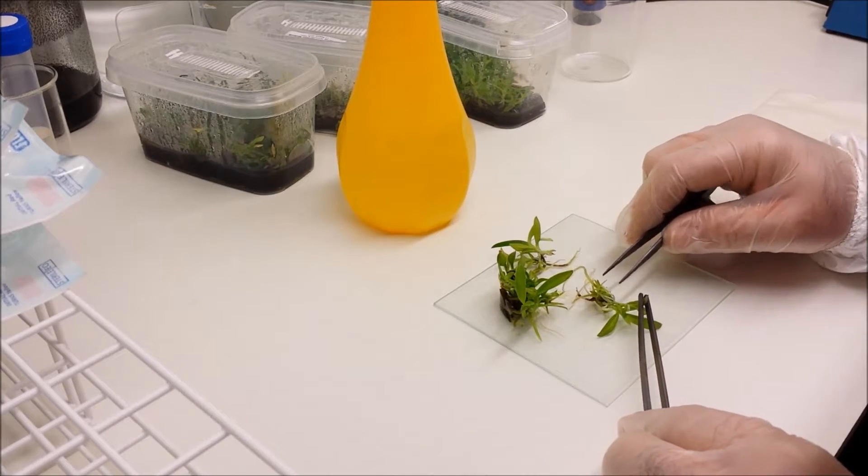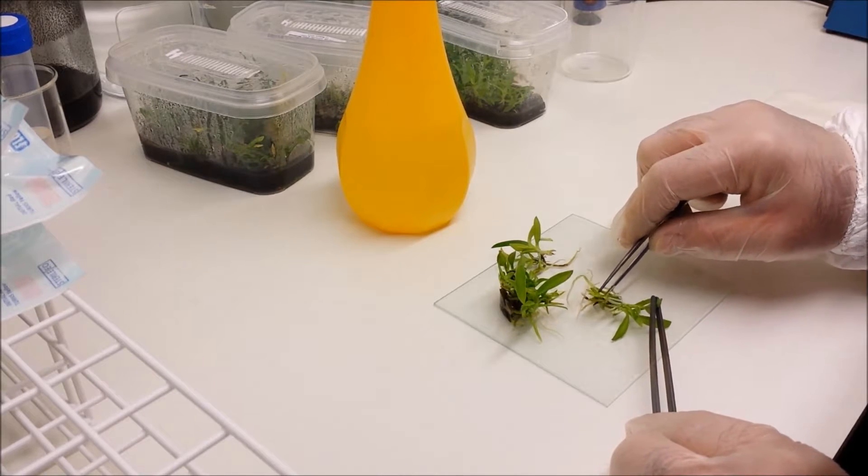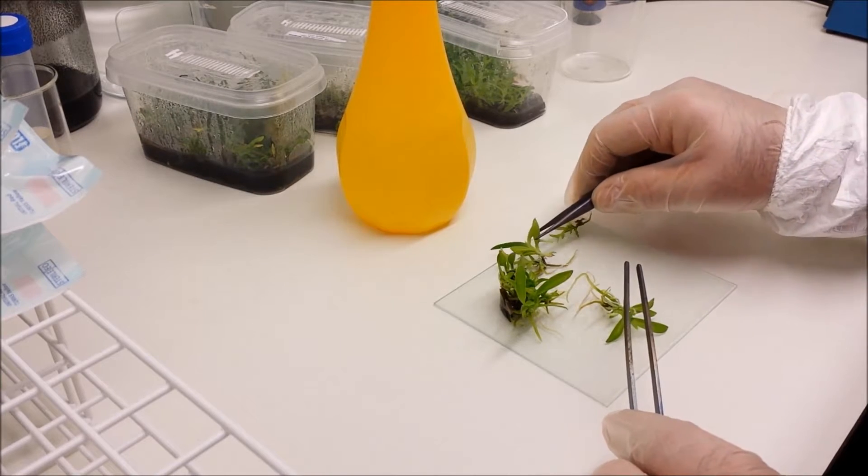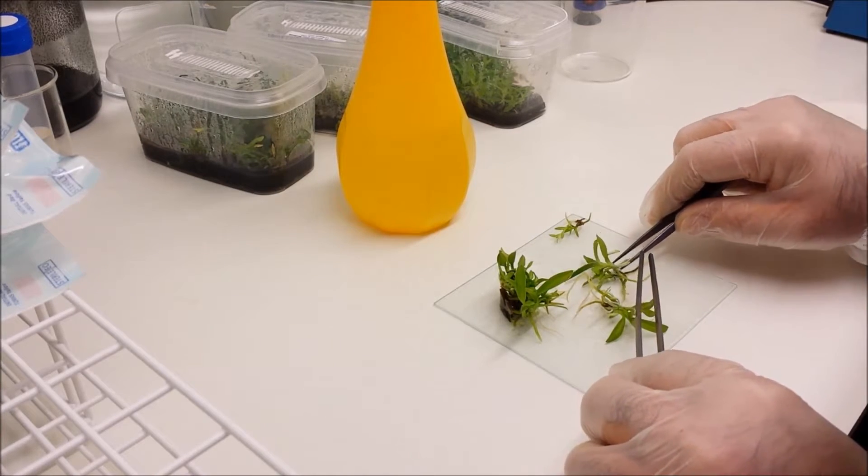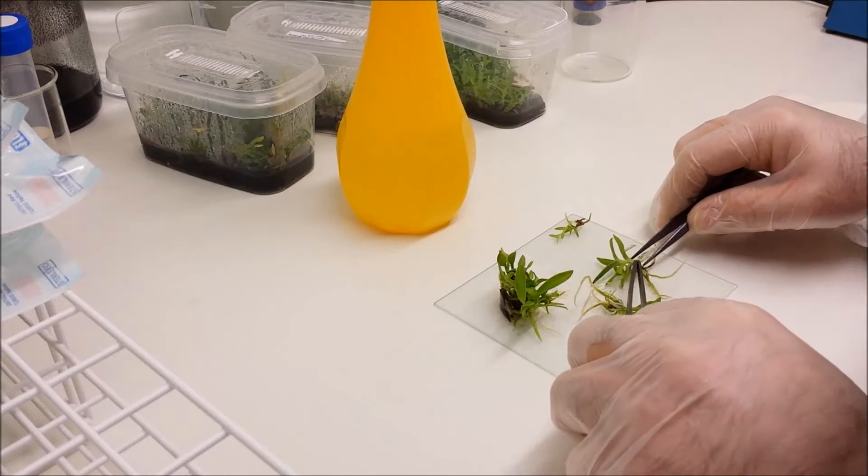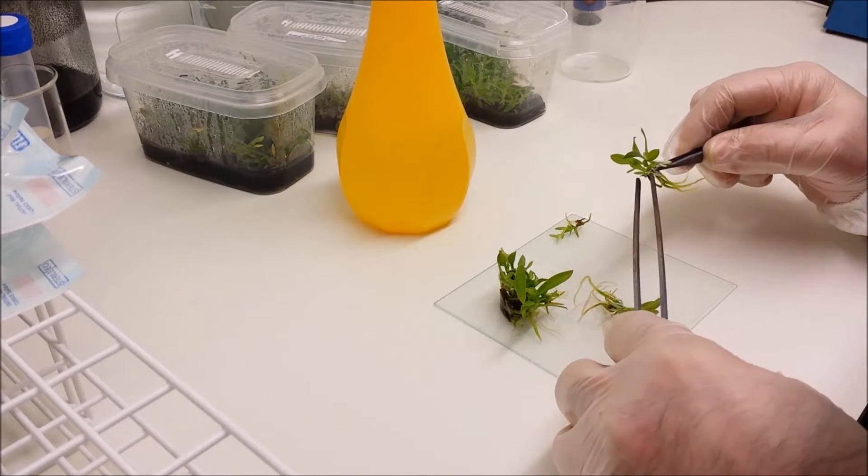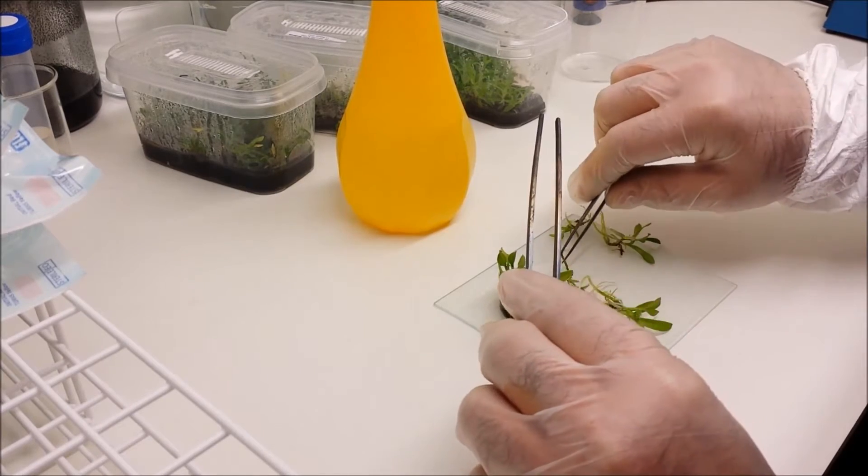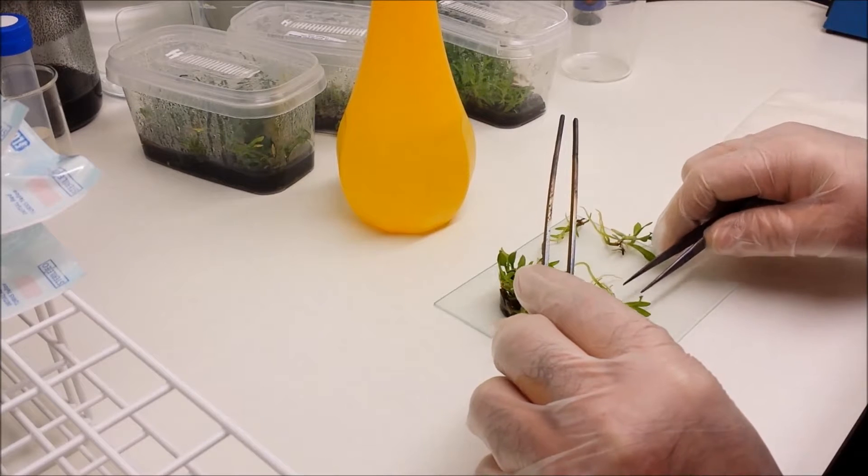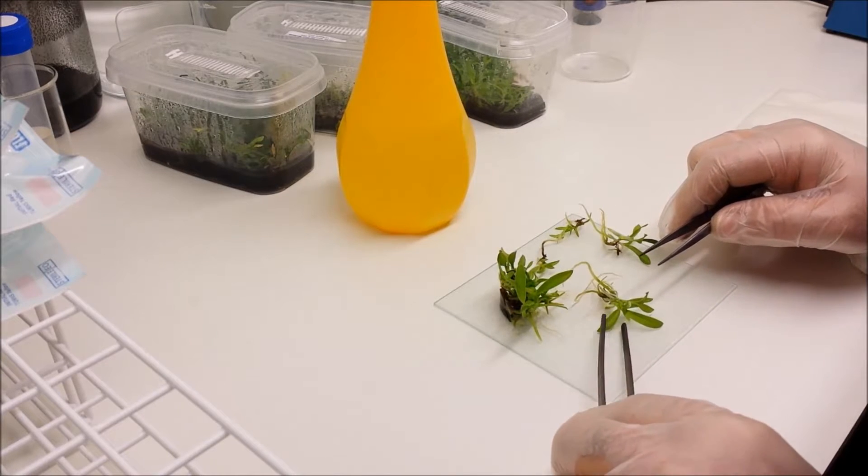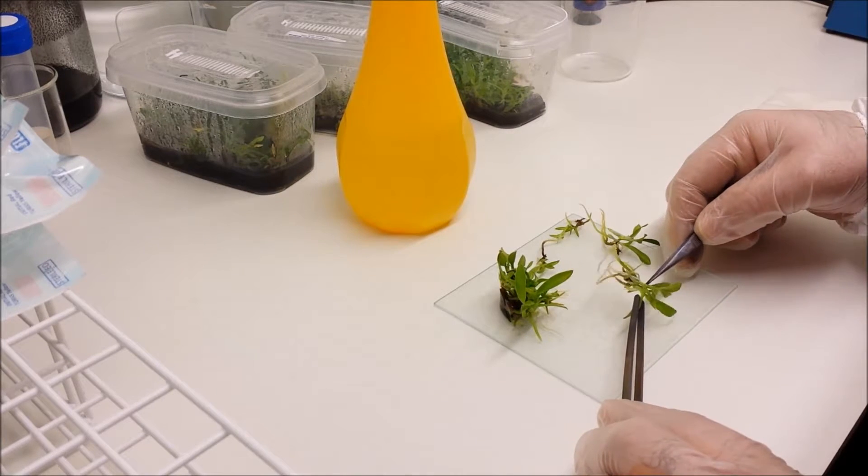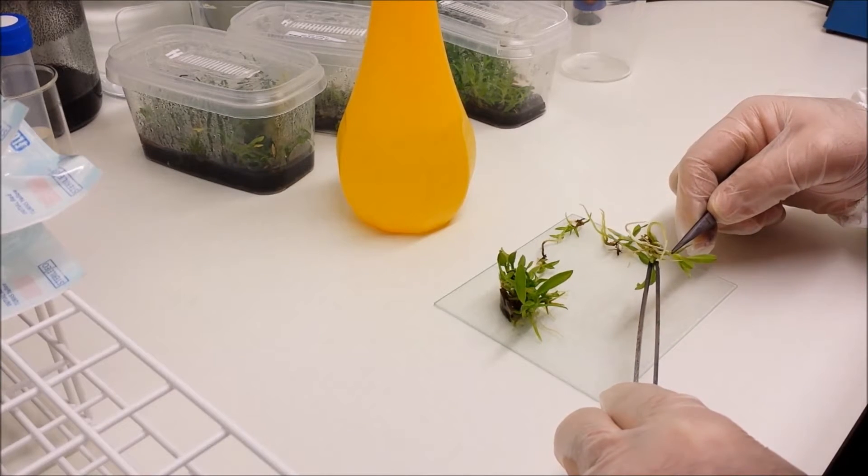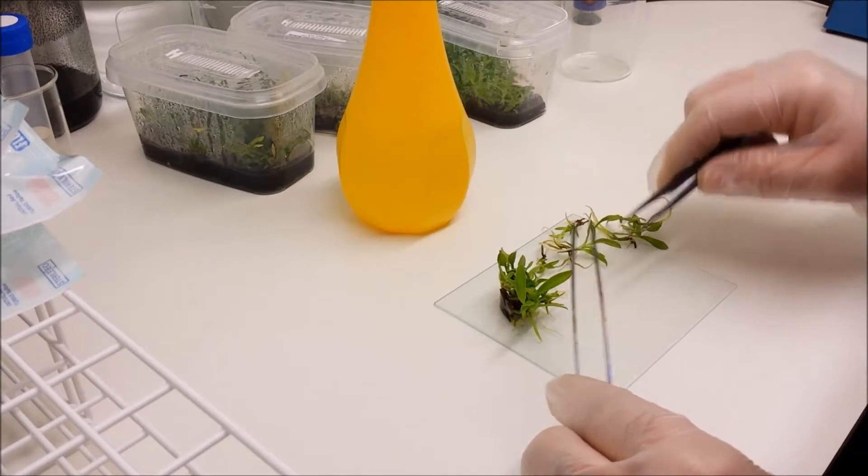So depending on how dextrous you are, you can either use two sets of tweezers to prise the plants apart, or you can use your fingers and one set of tweezers. You'll find that you tend to be a little bit more accurate when you do use tweezers, simply because it slows you down, stops you from pulling. So I'm separating these clumps out into individual plants, being careful not to destroy the stems and not to apply too much pressure as to bruise the plants.